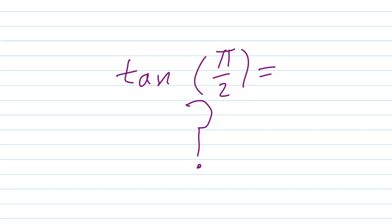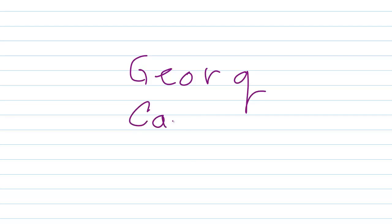Look up Georg Cantor in Google. I could also erase it in order to write down this guy's name. As far as I know, this mathematician who existed around the turn of the century from the 1800s to the 1900s lost his mind, in part because people made such fun of his theories, which are now pretty much commonly accepted today — transfinite cardinal numbers. You can also look that up in Google.